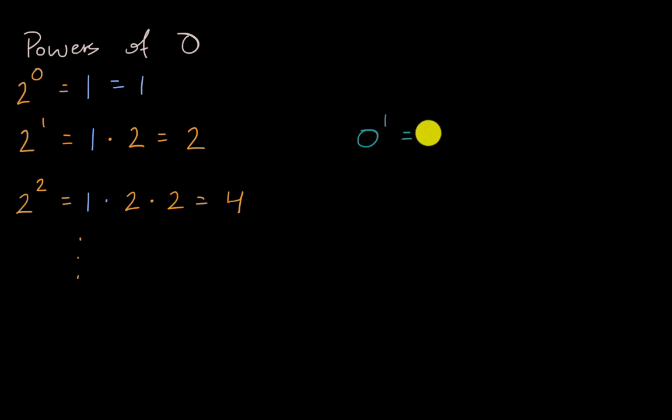Well, you do the exact same idea. You start with a one and then multiply it by zero one time. So times zero, and this is going to be equal to zero.